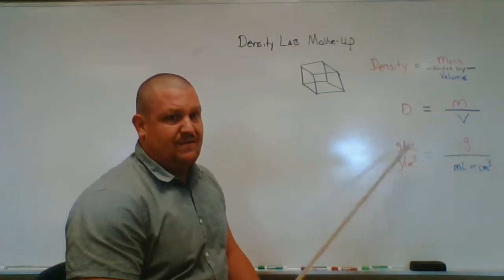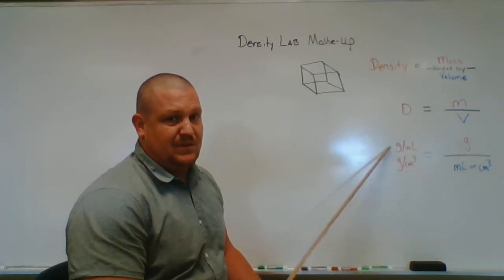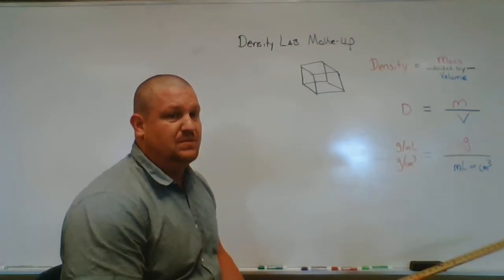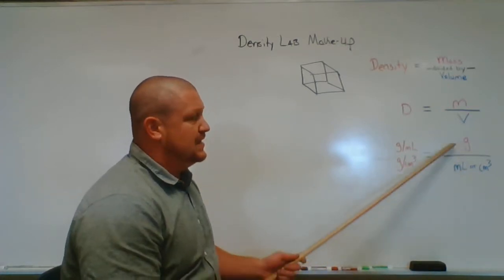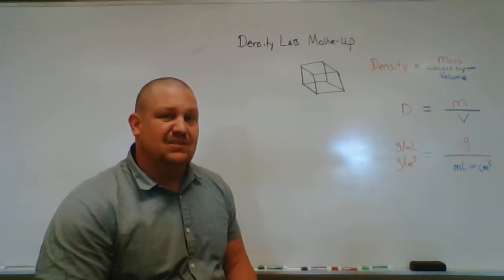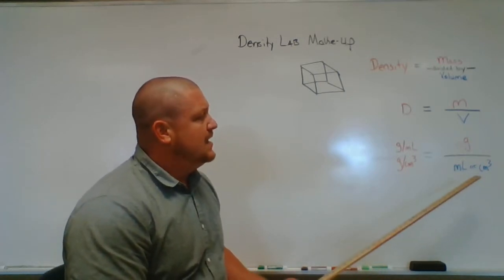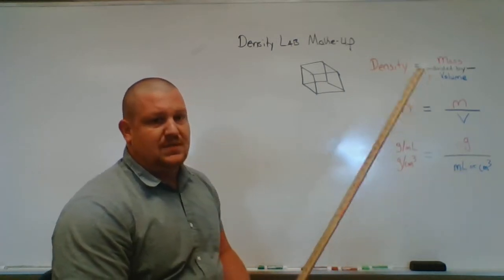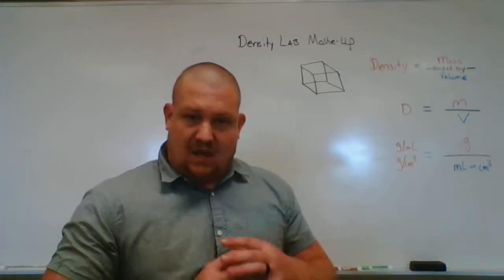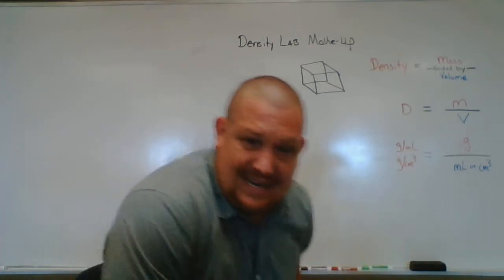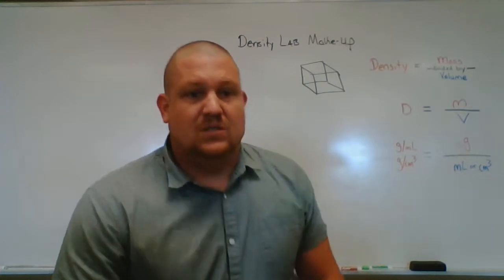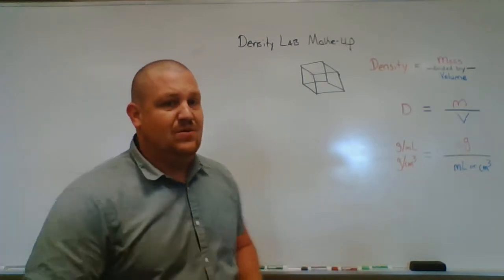We have units here — we mostly deal with grams per milliliter or grams per centimeter cubed for density. Mass is typically grams, although you may see kilograms sometimes. Volumes are typically milliliters or centimeters cubed. 99 times out of 100 you're going to be dealing with one of those units.